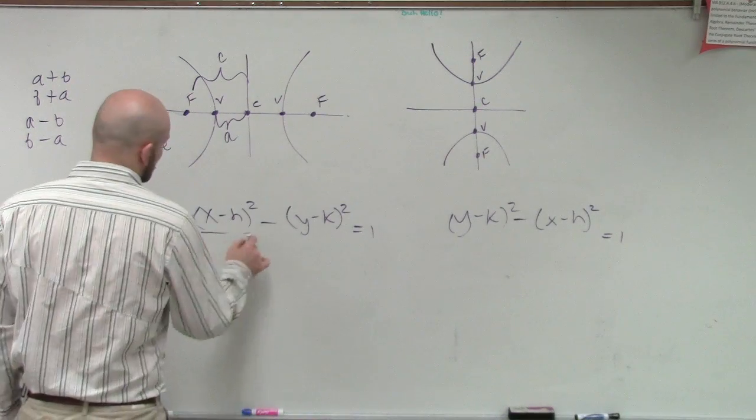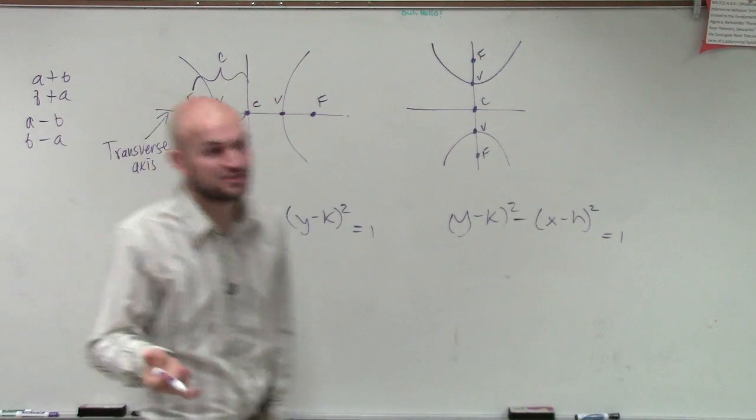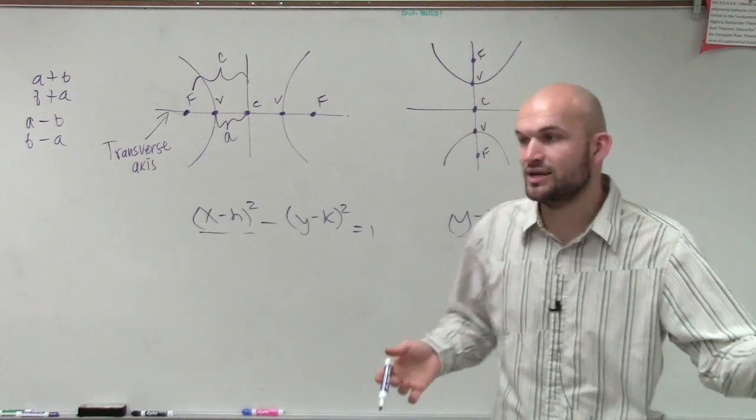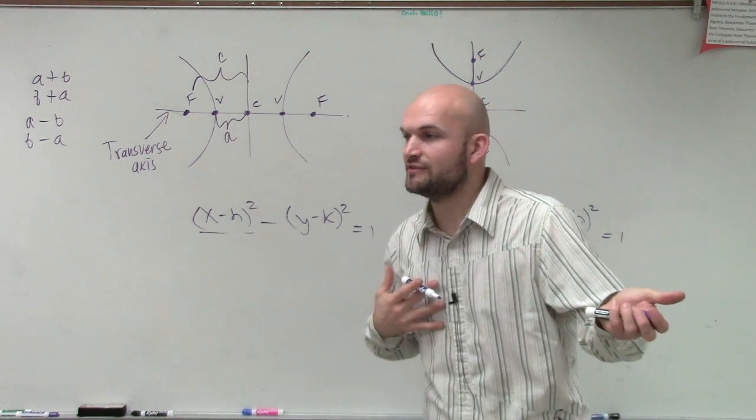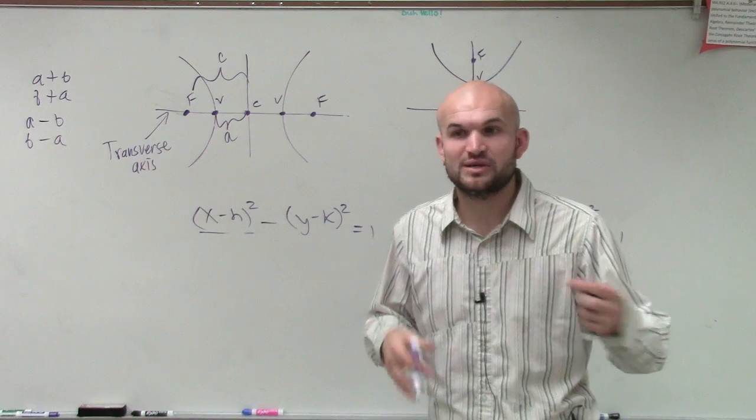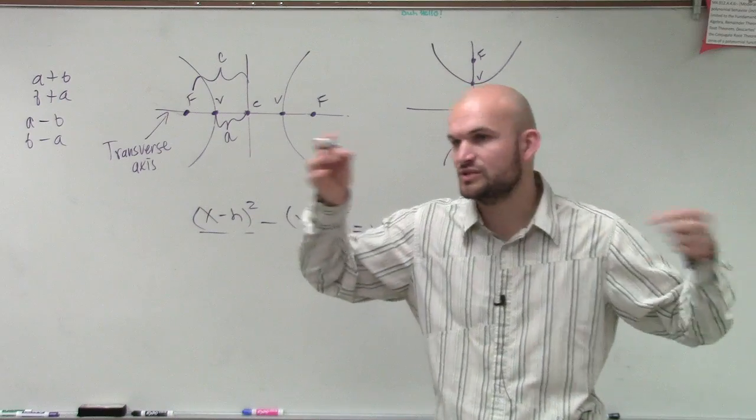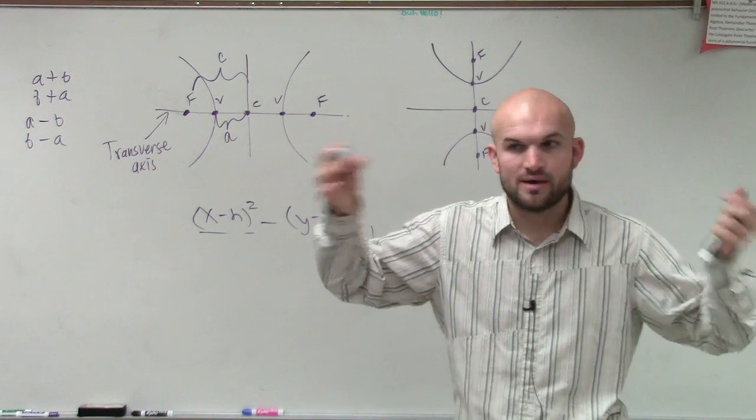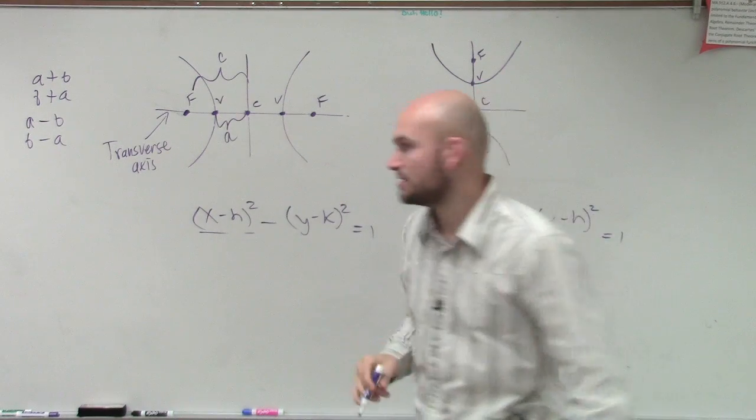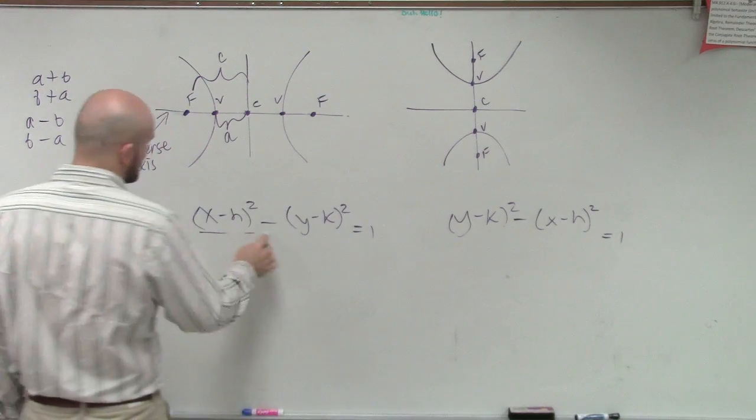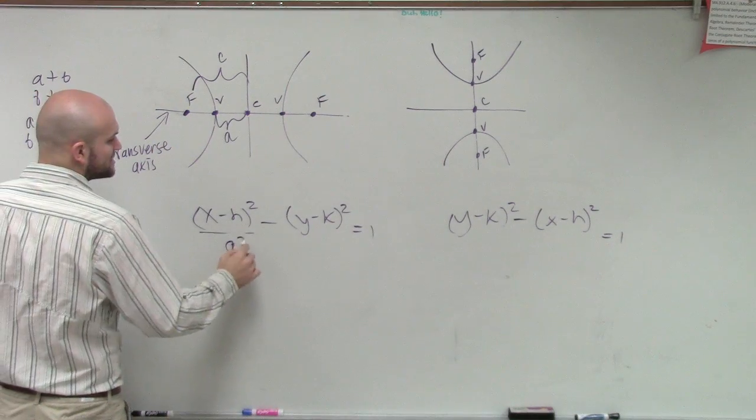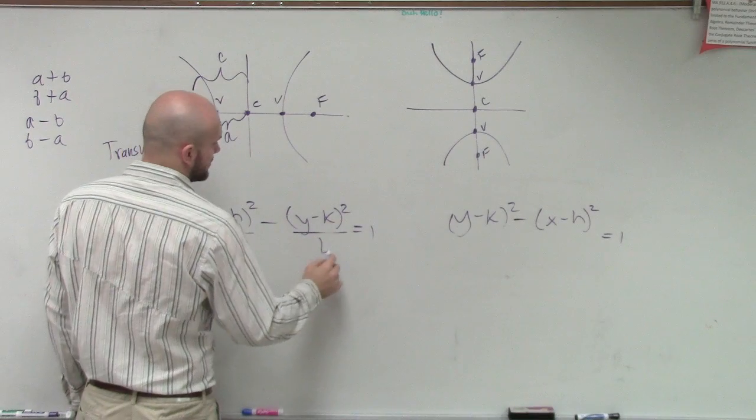We always, with our definition, because our constant can change. If we want to subtract one, if our definition of hyperbola is the difference between two distances from the foci to a point, if we change which distance we subtract from the other one, then we're going to have a different constant.